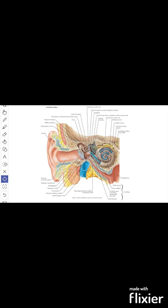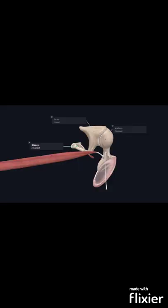The main contents are the ear ossicles. They include the malleus, incus and stapes. This is a model to show the ear ossicles. These are left side ear ossicles.